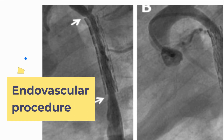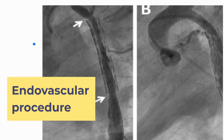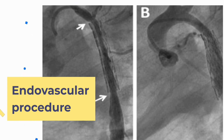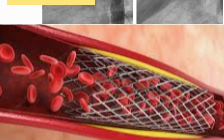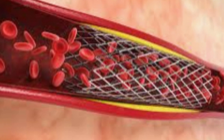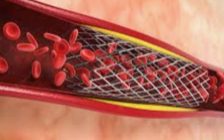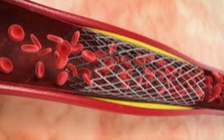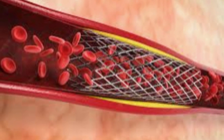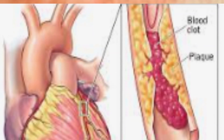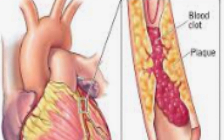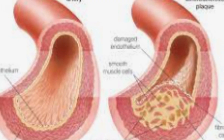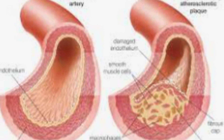Angioplasty is a minimally invasive endovascular procedure used to widen narrowed or obstructed arteries or veins, typically to treat arterial atherosclerosis. In other words, angioplasty is a procedure to improve blood flow in blood vessels that have become narrowed or blocked. Blockage is made of cholesterol, calcium, and other substances in your blood, and over time it can narrow your arteries or fully block them.